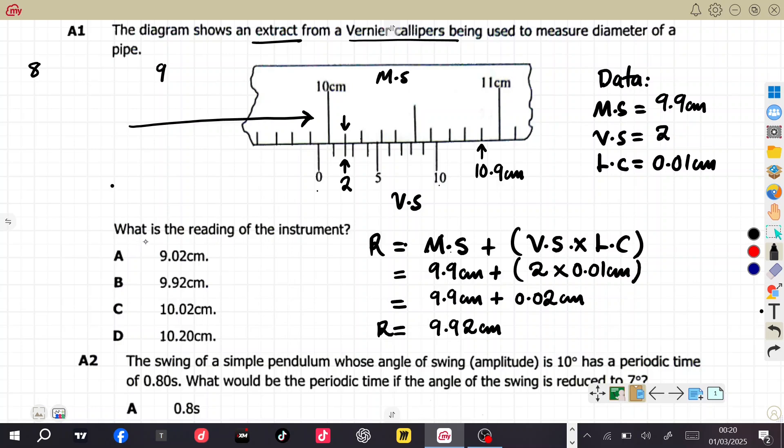So when they said, what is the reading of the instrument, they have provided these options, A, B, C, D. So when we compare the options provided here, which one is similar to our answer is B. So the answer is B, so the answer is B like that. So let's move to the next question.